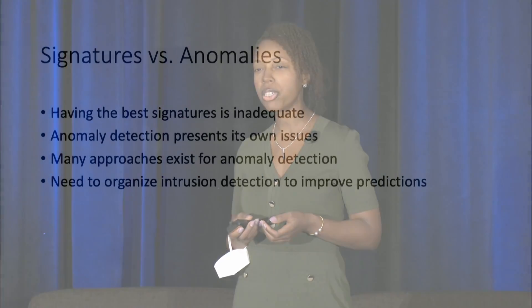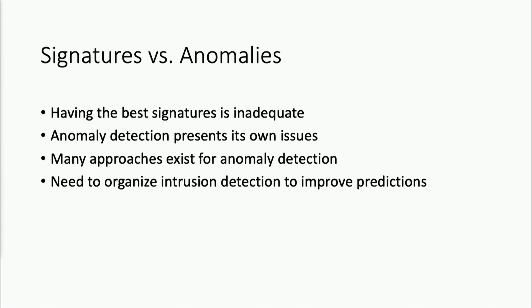Signature-based approaches are inadequate because they're based on previously known attacks. What we need are anomaly-based approaches, anomaly-based models, though they face their own issues — they typically have high false alarm rates or high false positive rates, whereas signature-based approaches have high false negative rates. So we need to assess and address that issue of error with mathematical and computational approaches that can reduce such error.